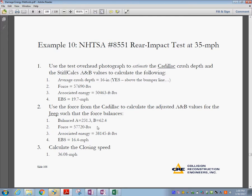We use the real test overhead photograph to estimate the Cadillac crash depth. The stiff scales A and B values to calculate the following. Average crash depth, 16 inches above the bumper line. Force, 57,000 pounds. Associated energy. Then EBS, 19.7 miles an hour.